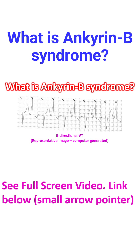Welcome back to my channel. Ankyrin B syndrome is due to ANK2 variants which result in Ankyrin B loss of function. Ankyrin B has roles in expression, localization and regulation of proteins important in cardiac excitability, cytoskeletal integrity and signaling.